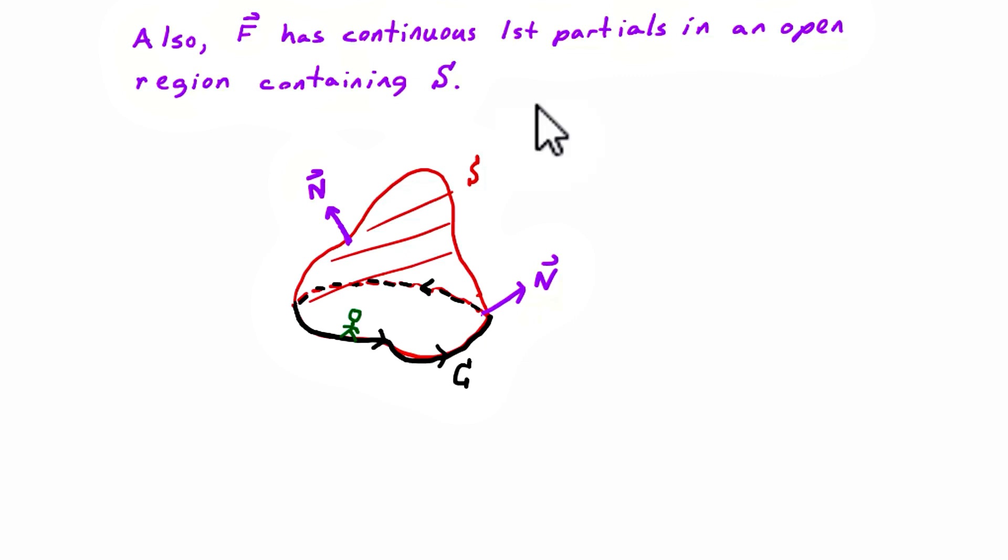And what did Green's Theorem say? In the plane, S devolves into a flat surface, right? So let's say we're in the plane, and then S devolves into this flat region, which we often call D or R.